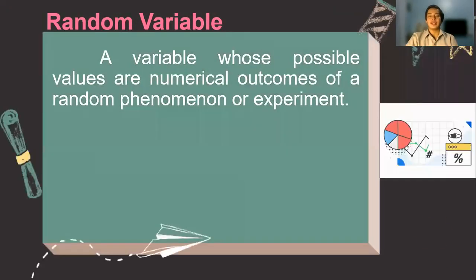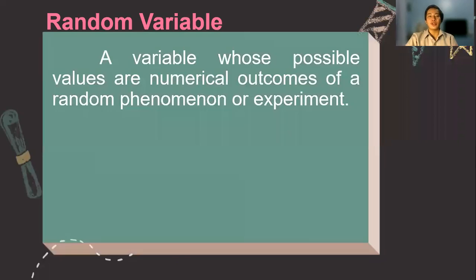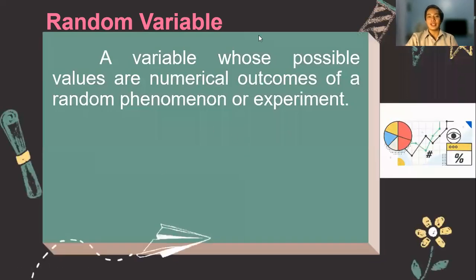So what is a random variable? A random variable is just like in algebra, so it is also represented by a certain letter, and usually we use a capital letter to represent the random variable. But this time, the variable is associated with possible outcomes. So whenever we associate a variable to the possible outcomes, which is a probability based from a certain statistical experiment or a random phenomenon, then that forms a random variable.